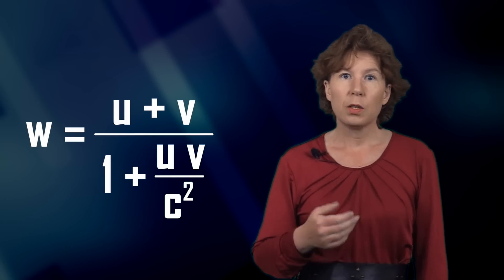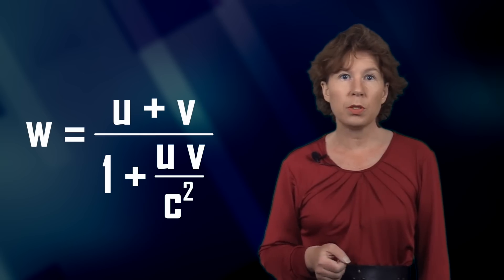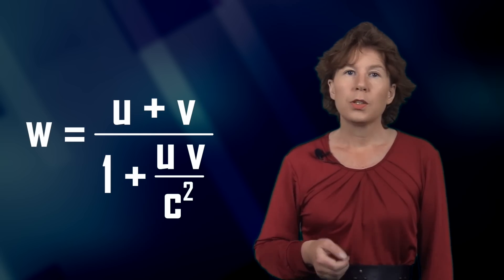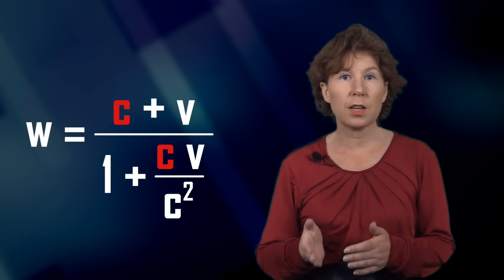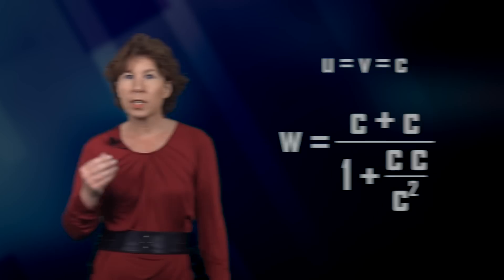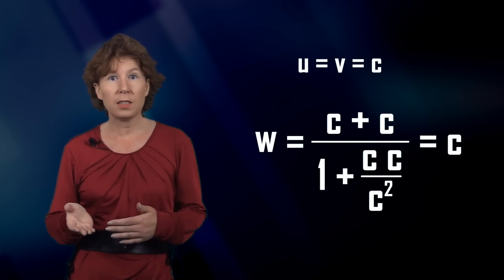Strictly speaking, velocities have to be added using this formula, where U and V are the two velocities you want to add, W is the result, and C is the speed of light. You can see immediately that if one of the velocities, say U, is also the speed of light, then the resulting velocity stays the speed of light. So if you add something to the speed of light, the speed of light doesn't change — if you come running at me, the light from my flashlight still comes at you with the speed of light. Indeed, if you add the speed of light to the speed of light — perhaps to find the velocity at which two light beams approach each other head-on — you get C plus C equals C. So in units of the speed of light, according to Einstein, one plus one is one.